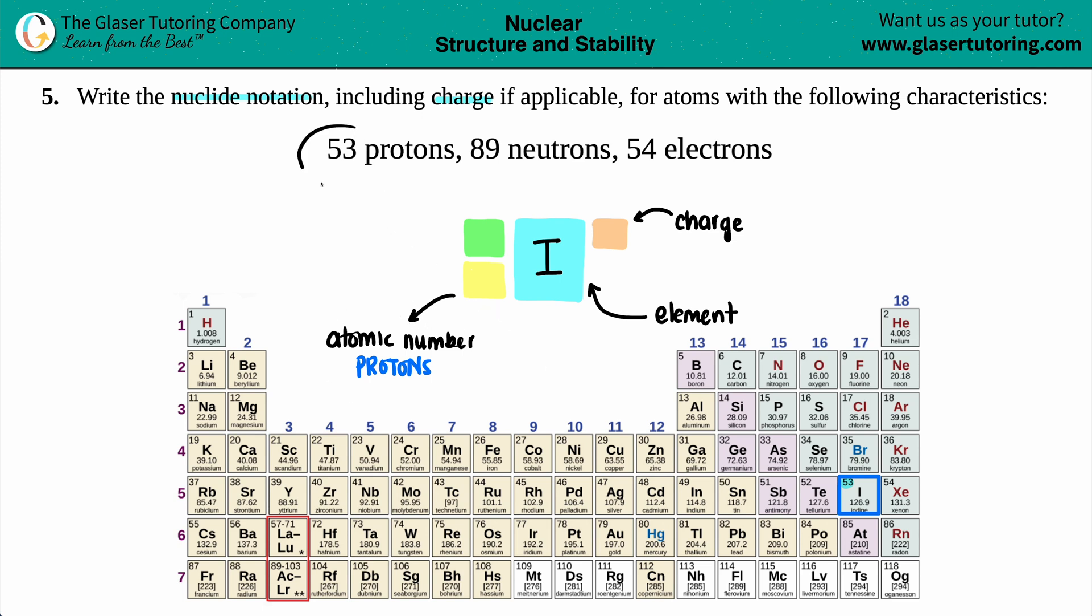Okay. Atomic number, number of protons, that's 53. So that number is going here. We're 50% done with our notation.